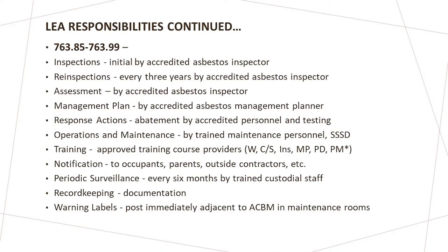The annual notification to occupants, parents, and outside contractors is very important and must be documented in writing — through newspaper, union newsletter, flyers, or direct contact with parents. There's also a requirement for every six months that a trained custodial staff person perform what's called a periodic surveillance. That person looks at the most recent asbestos inspection, goes around examining all identified asbestos containing building materials to check their condition, and if anything has changed, documents that information in the management plan.